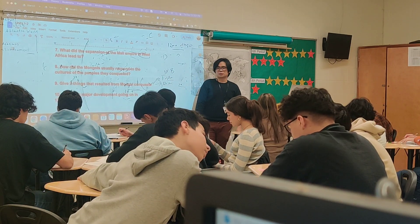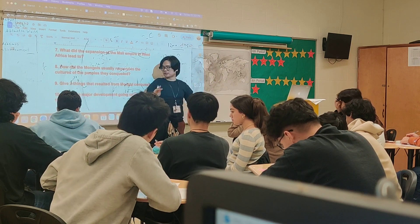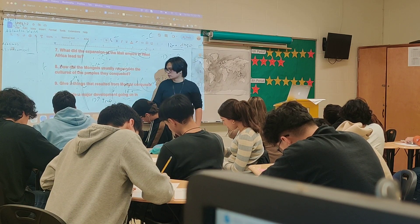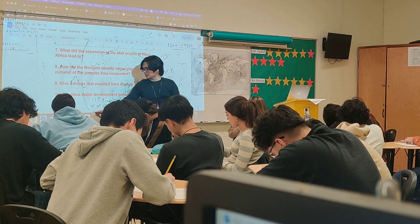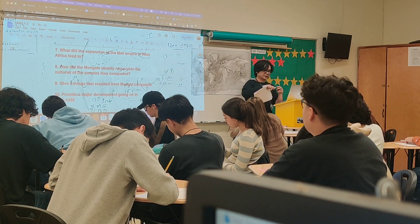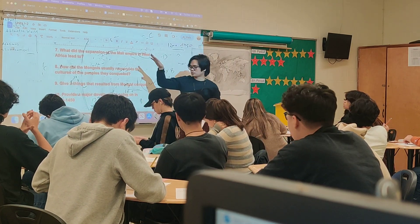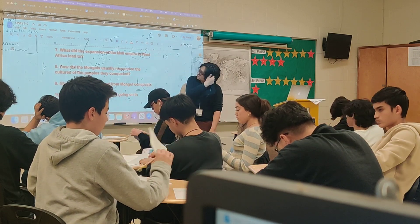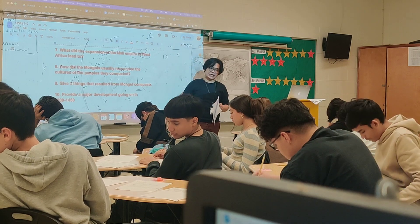Number ten: provide major developments of the 1200 to 1450 period. Three big picture themes at the global level: number one, intensification of trade — people trading and interacting more and more; number two, the rise of the Mongol Empire and the khanates that followed; number three, a devastating epidemic called the Black Death. Those are the three big picture themes. Tomorrow we'll start going over unit three — please don't save everything to the last minute. As empires expand, they incorporate more people into their trading networks.